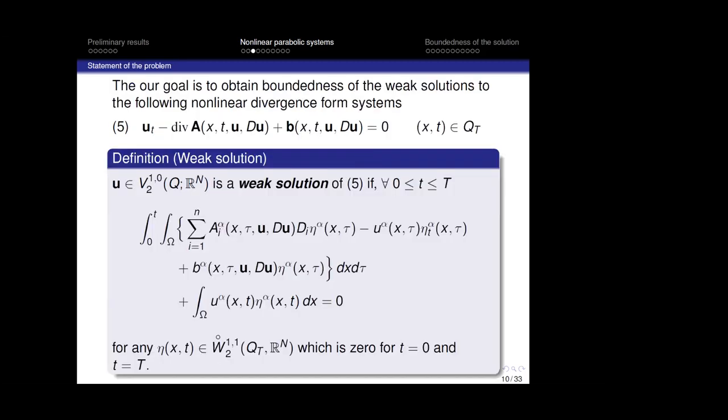Our goal is to obtain boundedness of the weak solution to the following non-linear divergence form system. We define a weak solution of this system as a function u belonging to the space V_{2,1,0} on Q_T. This function is a weak solution if for each t between zero and capital T, this equality is satisfied for any test function eta belonging to the Sobolev space W^{2,1}_{2,1,0} on Q_T, which is zero for t equal zero and t equal capital T.